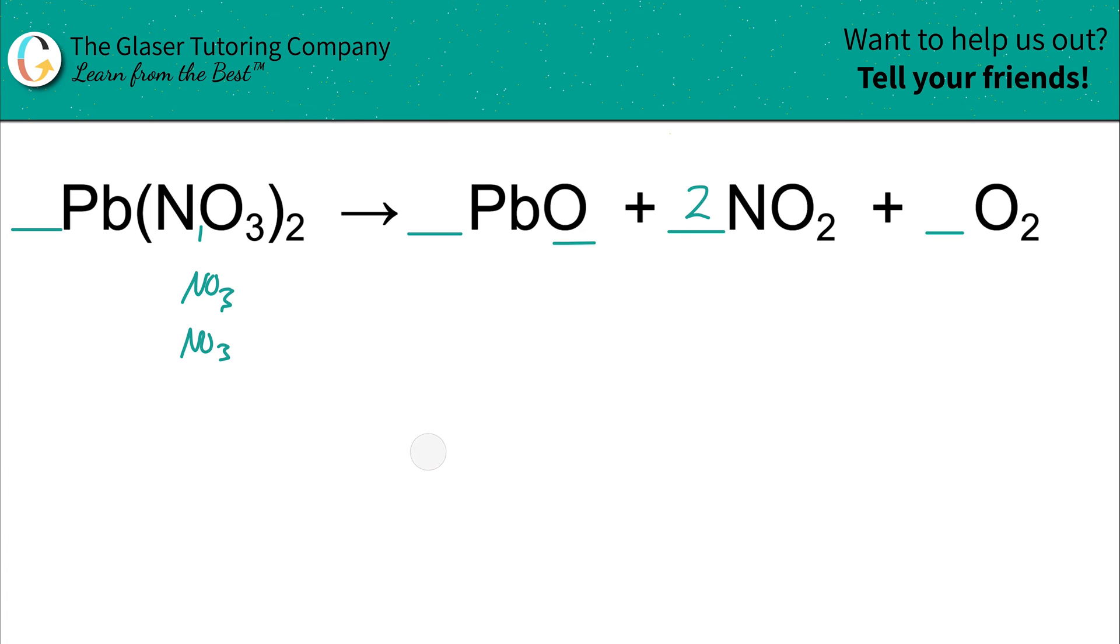But in any case now, the lead is balanced, but the nitrogen is going to be balanced now because you have now two NO2s, right? That's what this two signifies. And if in each NO2 you have one nitrogen, well, that means you'd have two in total, and that'll balance the two nitrogens on the left-hand side. So hopefully that makes sense.